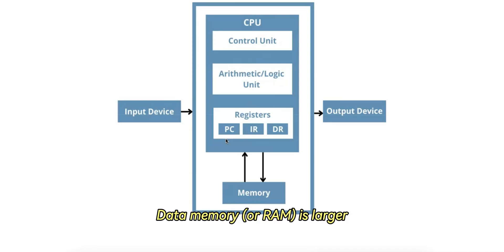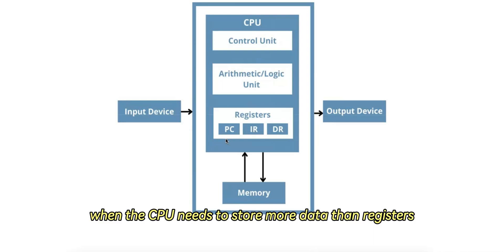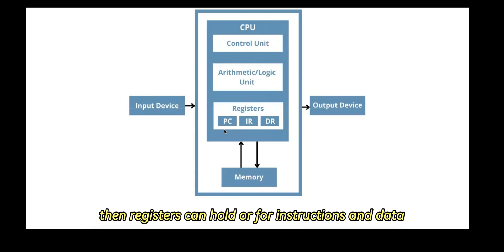Data memory, or RAM, is larger but slower, used for storing programs and larger datasets. RAM is used when the CPU needs to store more data than registers can hold, or for instructions and data that will be used over time.